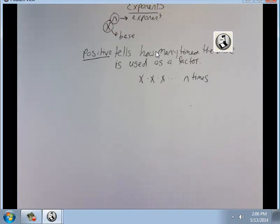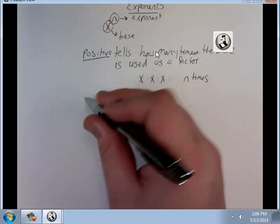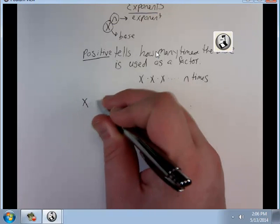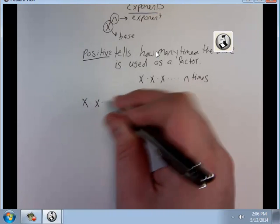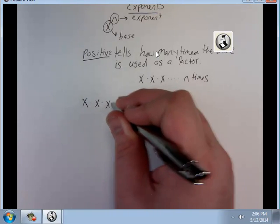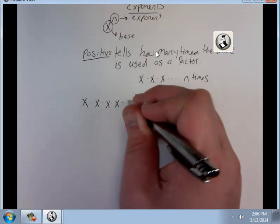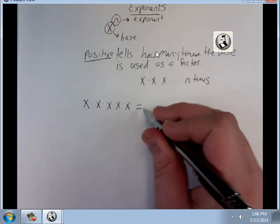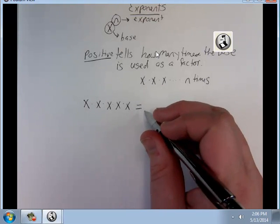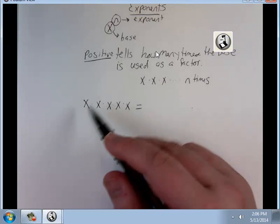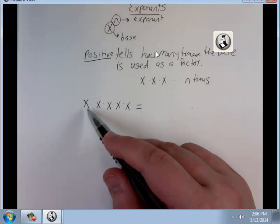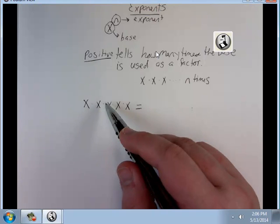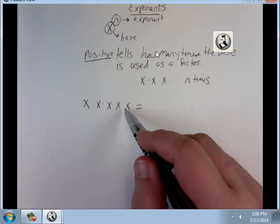Let me give you an example. x times x times x times x times x — we can shorten this to x to the fifth power, because I have x used as a factor five times.